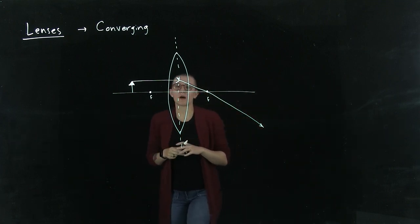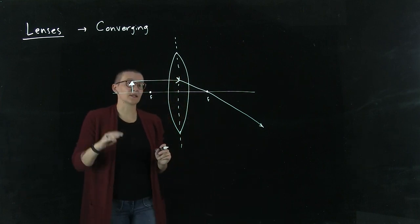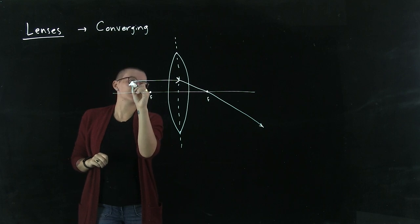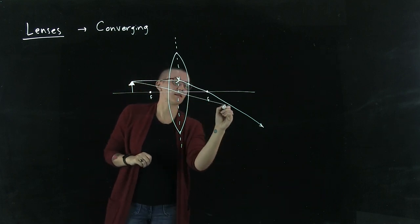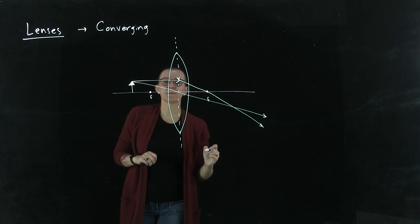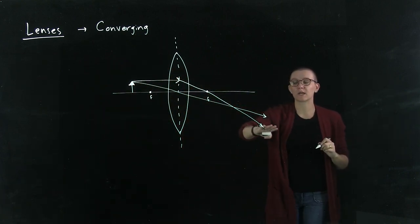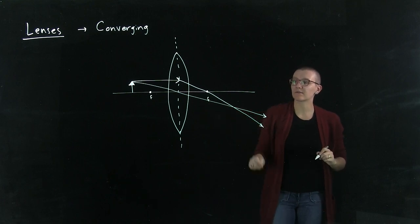Another ray that we can draw goes straight through the center of the lens and will just continue to travel. That light ray is the second light ray that you can draw. It will just travel straight through the center of the lens, very useful.